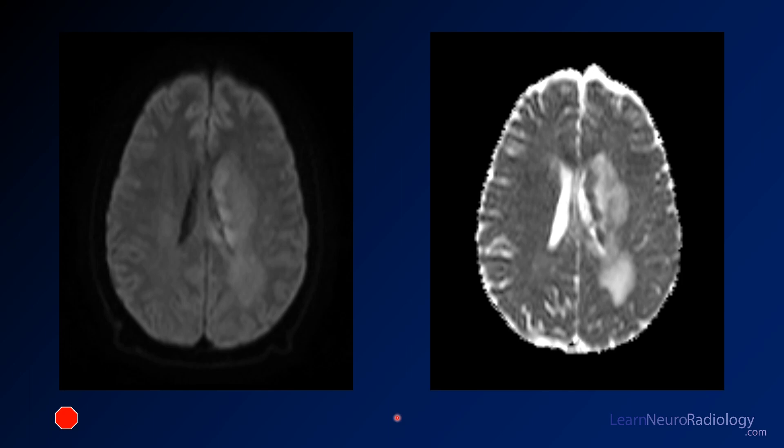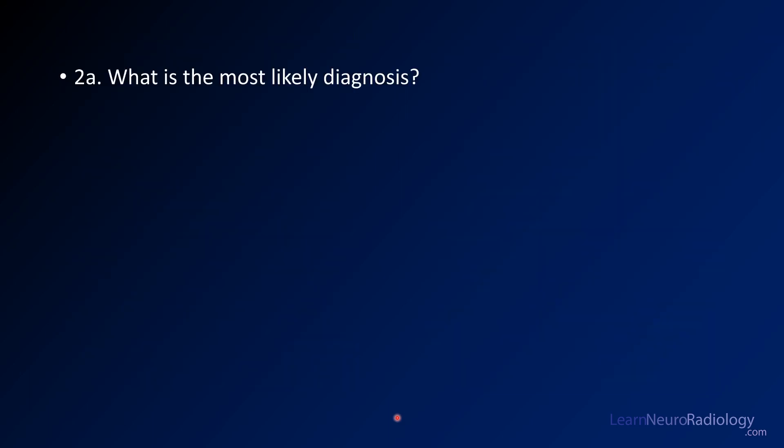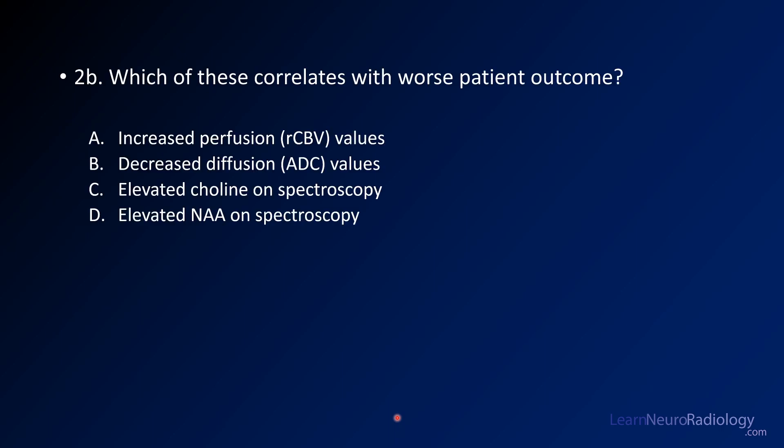This is the last image, so just think about what your diagnosis may be. Your first question is: what's the most likely diagnosis? Hopefully you've thought about that by now. Your second question is: which of these findings correlates with the worst patient outcome?